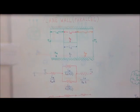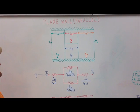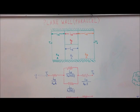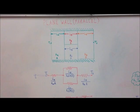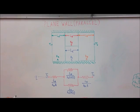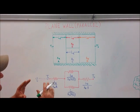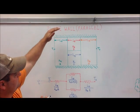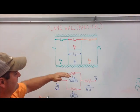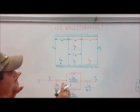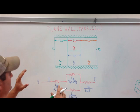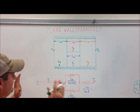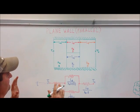For this next example, covering one-dimensional steady-state conduction, this plane wall is going to be in parallel. The material has four different mediums with an insulator on top and an insulator on bottom. As you can see, there is no ambient temperature on either side, so convection is not going to be involved.